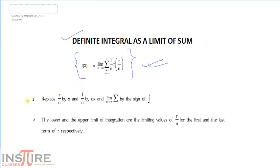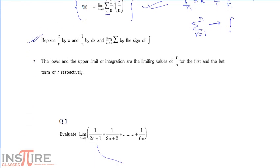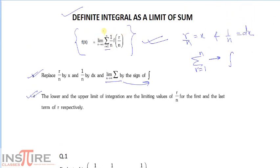The first point: replace r/n with x. We keep r/n as x, and 1/n is replaced by dx, and sigma r goes from 1 to n is replaced by an integral. The lower limit of sigma gives the lower limit of integration, and the upper limit of sigma gives the upper limit of integration.